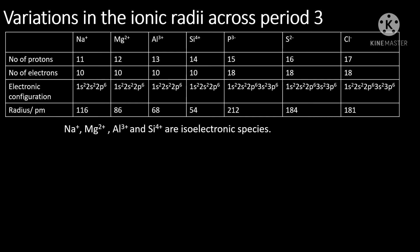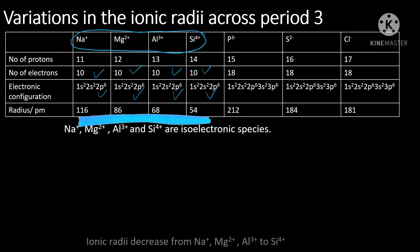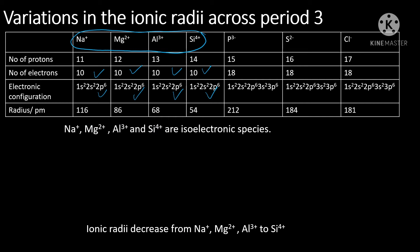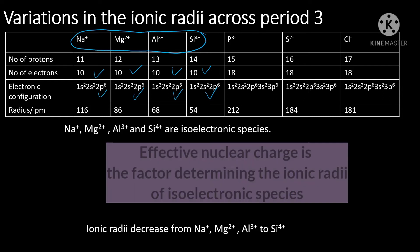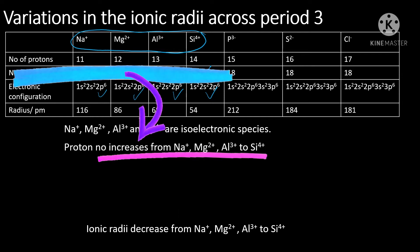We shall look at the first group of ions first, which is from sodium ion to silicon ion. Sodium ion, magnesium ion, aluminum ion, and silicon ion are isoelectronic species because they have the same number of electrons and therefore the same electronic configuration. From the table, we can see that the ionic radii decrease from sodium ion, magnesium ion, aluminum ion to silicon ion. For isoelectronic species, effective nuclear charge is the dominating factor in determining ionic radii, and effective nuclear charge depends on the proton number. The proton number increases from sodium ion, magnesium ion, aluminum ion to silicon ion.